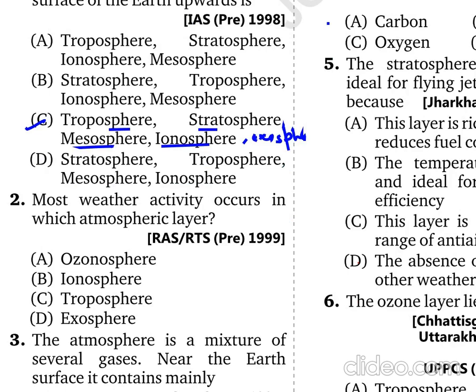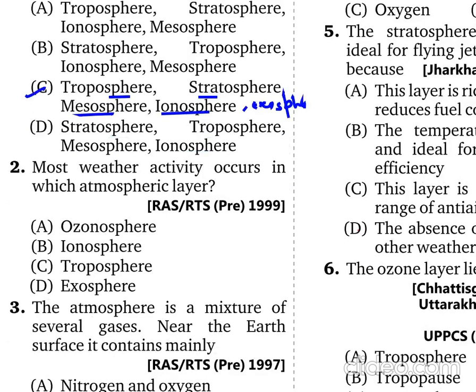The next question asks where most weather activity occurs. Most weather activity is in the Troposphere. 'Tropo' literally means changes, and this is the part of the atmosphere where all climate and weather changes take place — clouds, rain, precipitation — all occur in the Troposphere. The Stratosphere, on the other hand, is completely calm, which is why flights and aircraft fly in the Stratosphere.